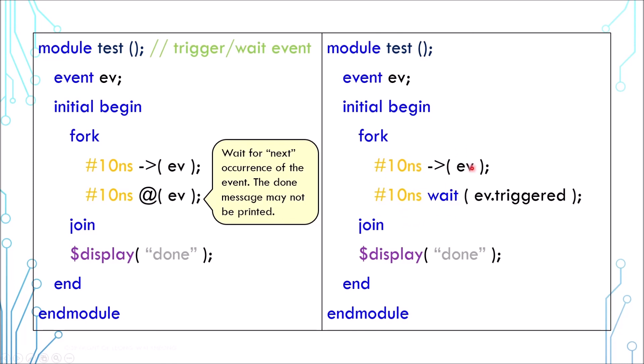Even if the trigger happens first and the blocking happens later, such that the blocking would not see an upcoming trigger, because of the event.triggered property, it would see the event as being triggered in the current time step and it would perceive that the waiting is over and continue.